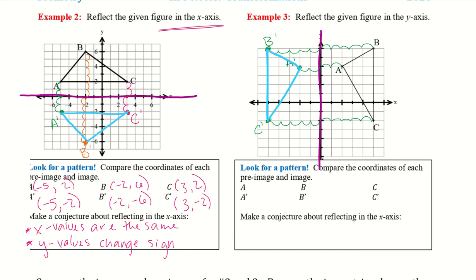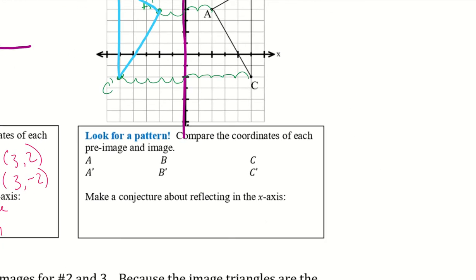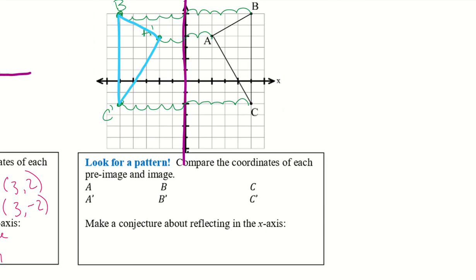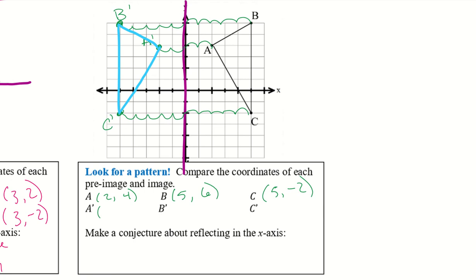Putting down the coordinates: A is (2, 4), B is (5, 6), and C is (5, −2). Now looking at the image: A prime is (−2, 4), B prime is (−5, 6), and C prime is (−5, −2). Take a second and compare them.